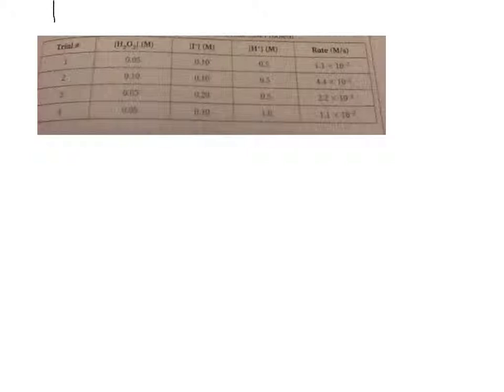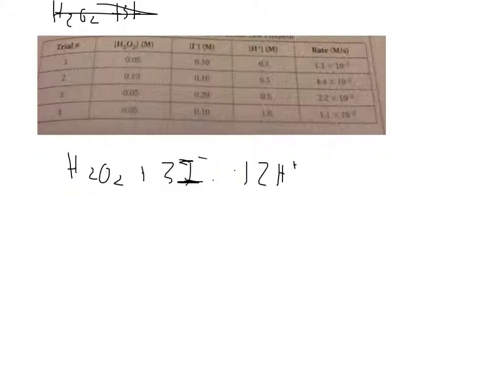The equation is H2O2 plus 3 iodide ion, I negative, plus 2 hydrogen ions, H+, yields I3 negative plus 2 H2O.